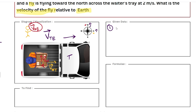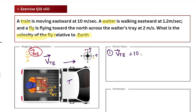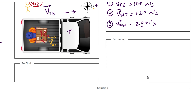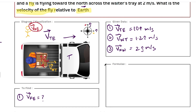Let's write the given data. The velocity of train with respect to earth has magnitude 10 and direction eastward, so it is 10 i-cap meters per second. The velocity of waiter with respect to train has magnitude 1.2 and direction eastward, so it is 1.2 i-cap meters per second. The velocity of fly with respect to waiter has magnitude 2 and direction north, so it is 2 j-cap meters per second. We have to find the velocity of fly with respect to earth. This is a case of relative motion.